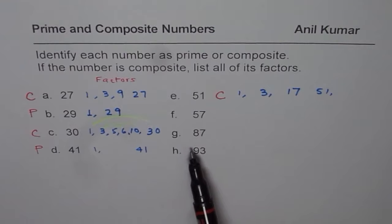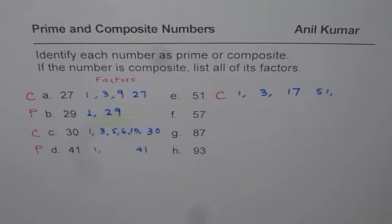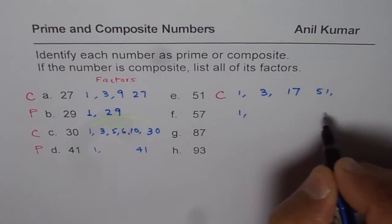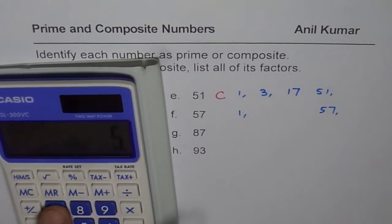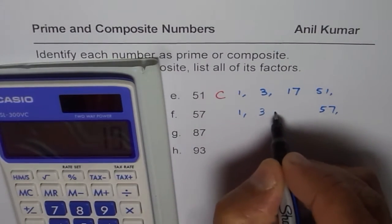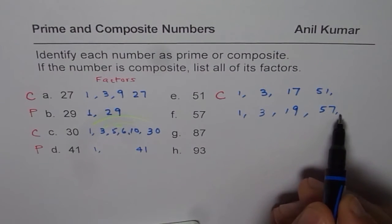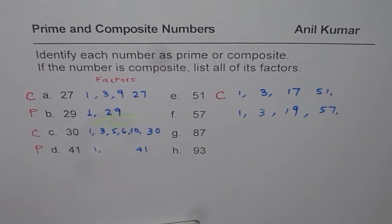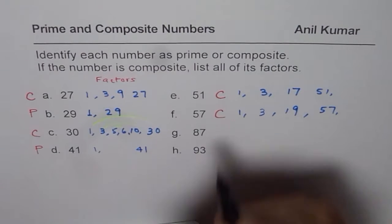57 is your next number. If you add 5 and 7, you get 12. 12 can be divided by 3. And therefore, 3 is a factor for this number also. So there are 2 factors, of course, 1 and 57. To find the other factors, we know 3 could be a factor. So we'll divide 57 by 3. What do we get? We get 19. So 3 times 19 is 57. Now, these are all prime numbers. So these are the factors for 57. Since we have more than 2 factors, this is also a composite number.